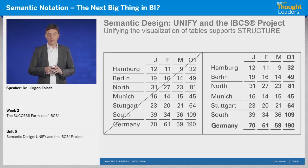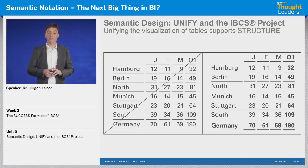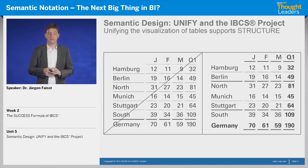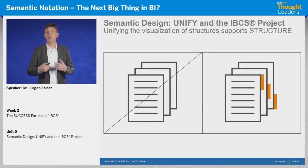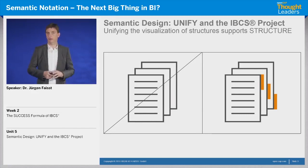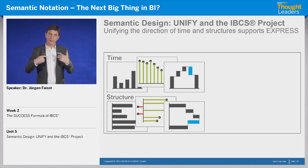If we look at tables, unifying their visualization by using the same design style guide means it helps to understand the structure of a table. You can see on the left-hand side a bad design of a table, and on the right-hand side a well-structured design. If that is our standard, it supports structure. Likewise, if we have a consistent visualization for chapters of a ten or fifteen page report, we would understand the structure of that report.